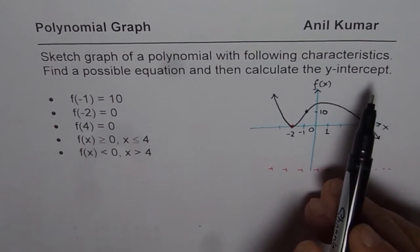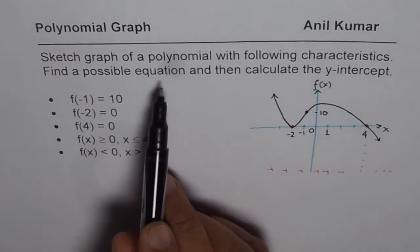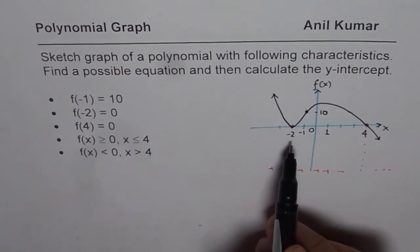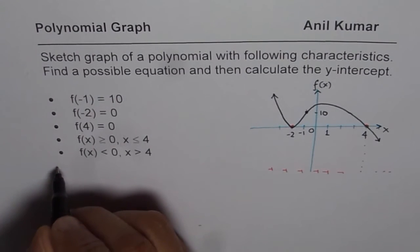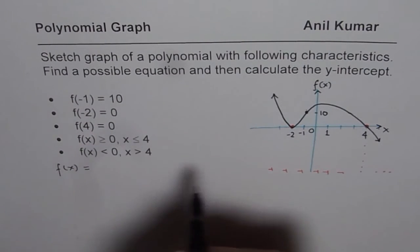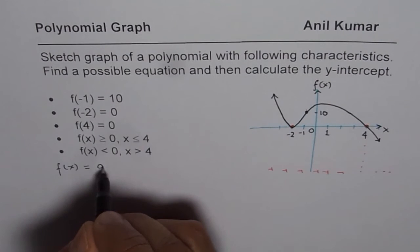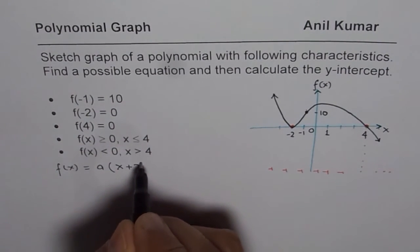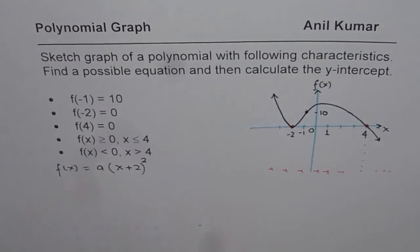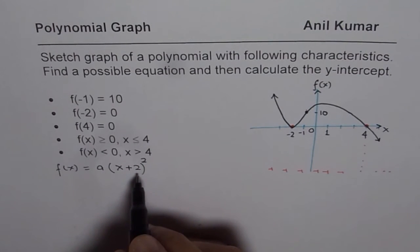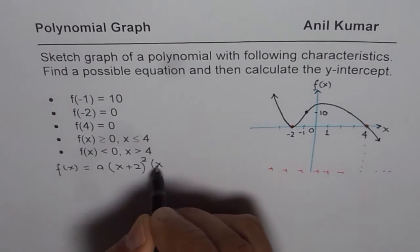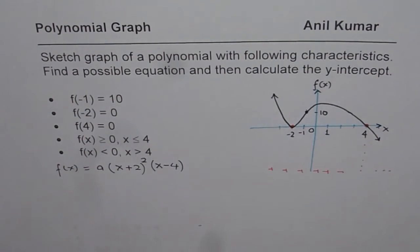Now let us look into the next aspect which is find a possible equation and then calculate y-intercept. Now we can write down the equation of this function f of x as equal to a times, here we have a turning point x plus 2. This is the zero. And since it turns, we will assume this to be of degree 2. So we want to keep it simple. Then the other one is at 4, which is a linear zero. So we will write this as x minus 4 as the next factor.